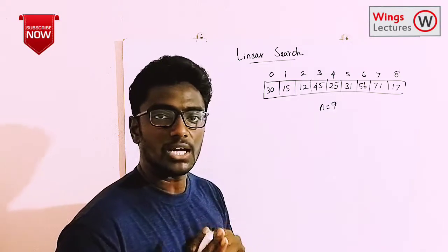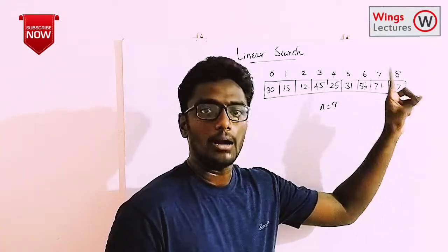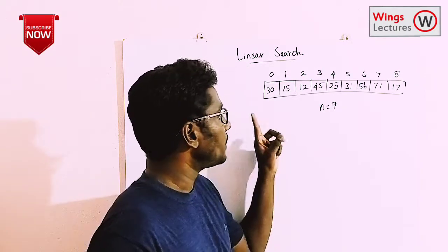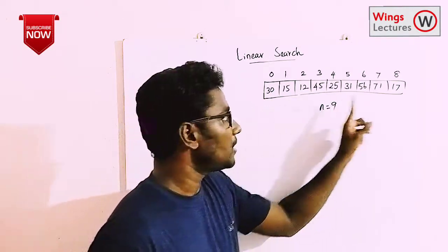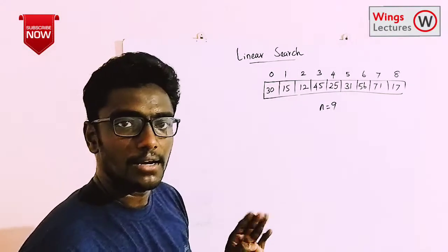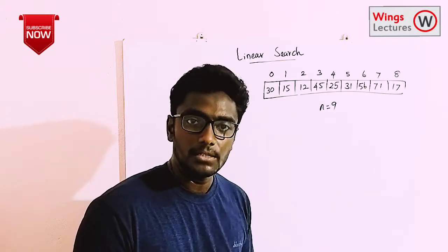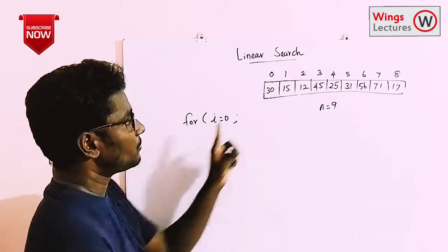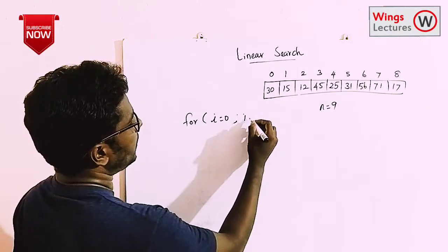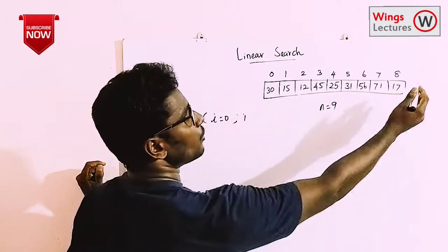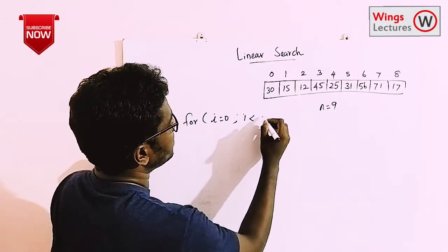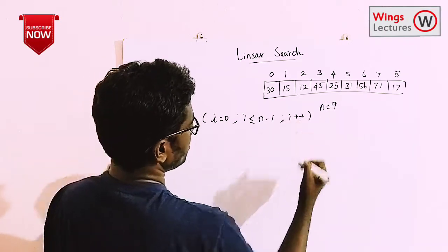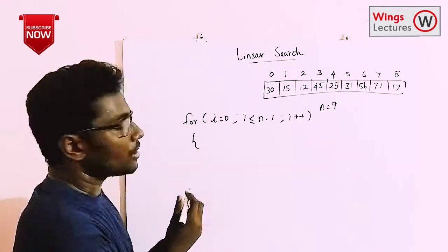I already said we have to start searching from index zero up to the last element. Sometimes the key element will not be available in the list, so we have to start scanning from the first element up to the last element. For that, we can use a for loop: for i = 0, with condition i <= n-1, and i++ to increment one by one. That's the structure of the for loop.